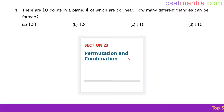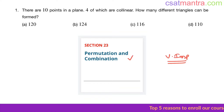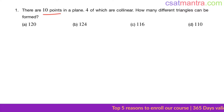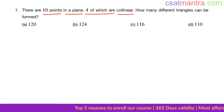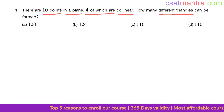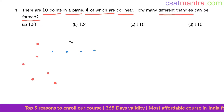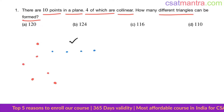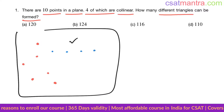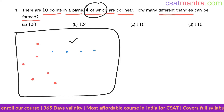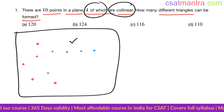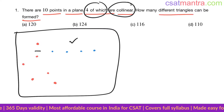A very important problem based on permutation and combination — these kinds of problems are seen in every exam. There are 10 points in a plane, four of which are collinear. How many different triangles can be formed? We have 10 points in a plane, out of which four are collinear.